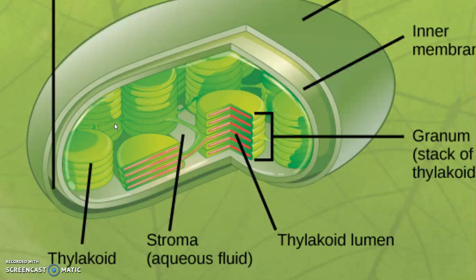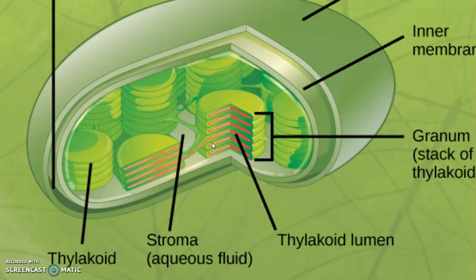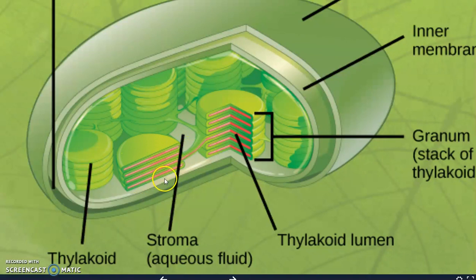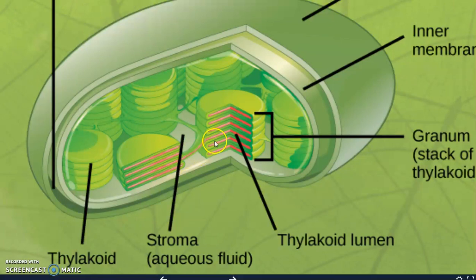This cartoon shows us the organization of the chloroplast. The important takeaway is all of the surface area created by the membrane forming the grana, or stacks of thylakoid. These are membranes where those key complexes are embedded. This gives us a lot of surface area for reactions to take place, and creates compartments to separate different chemical reactions. The light-dependent reactions occur in the thylakoid lumen, and the light-independent reactions occur in the stroma.